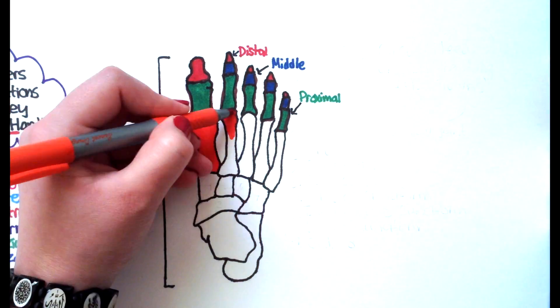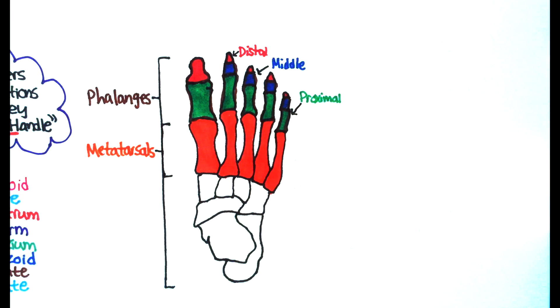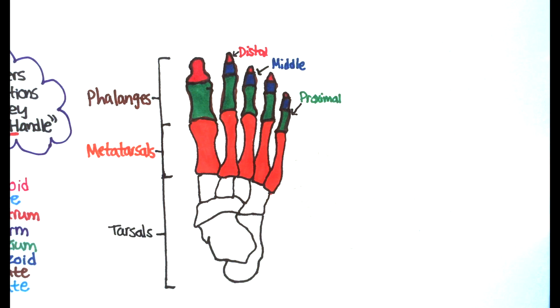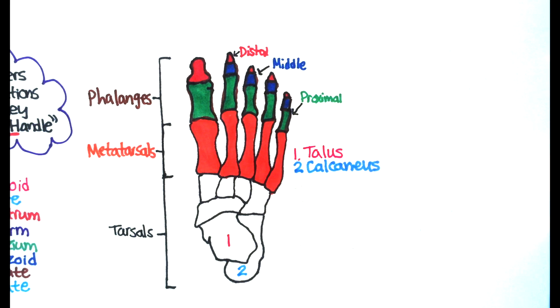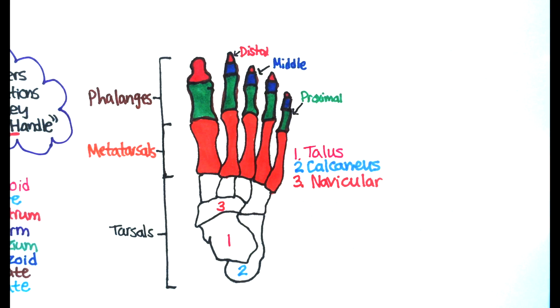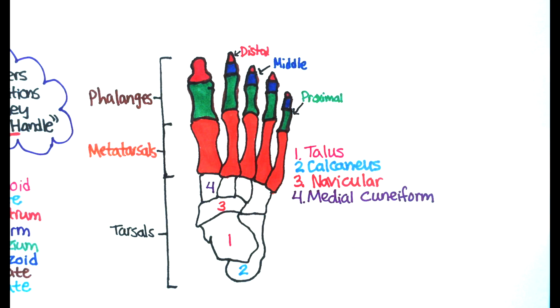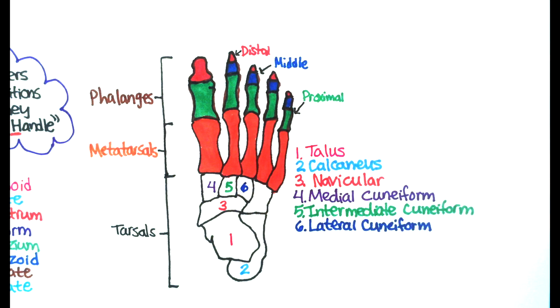The next bones we're taking a look at are the metatarsals, and then the tarsal bones. The tarsal bones consist of the talus, calcaneus, navicular, medial cuneiform, intermediate cuneiform, lateral cuneiform, and the cuboid.